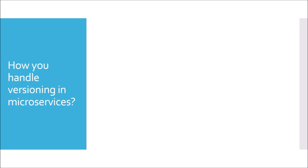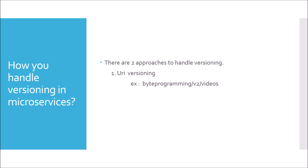How do you handle versioning in microservices? To handle versioning we have two approaches. The first is URI versioning — you put the version in the URI itself, for example: /api/v2/videos, where V2 indicates the application is on second version. The second approach is header versioning, for example using a custom header like X-version: 2.0. Each approach has pros and cons, but mostly header versioning is preferred.